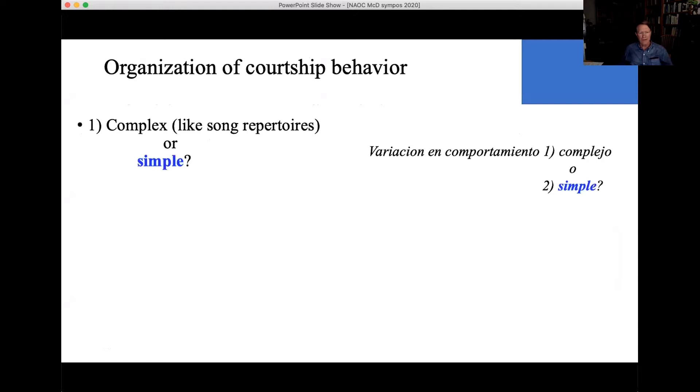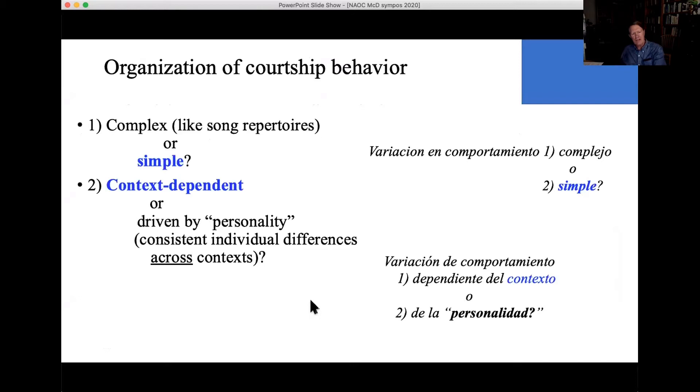And then a second one: does variation in courtship behavior depend on context, for example, whether males are by themselves, with a female present, or in a bout that's going to lead to a copulation? Or instead, are they driven by personality? That is, consistent individual differences across contexts, what's been called behavioral syndromes.